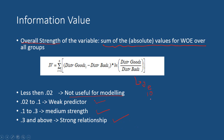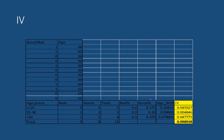Let us learn how to calculate the information value using the same data from the weight of evidence video, with a slight change to ensure none of the WOE values is zero. We have two variables: the dependent variable good-bad indicator, and the independent variable age. The grouping for age is less than 25, 25 to 30, and greater than 30, with the corresponding count of bads and goods, their percentages, and WOE values in each group.